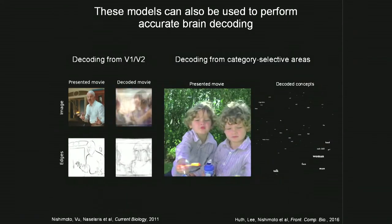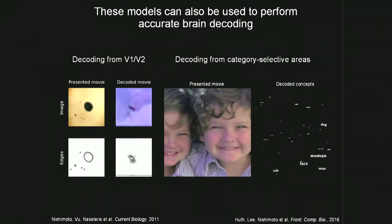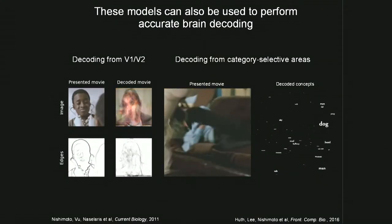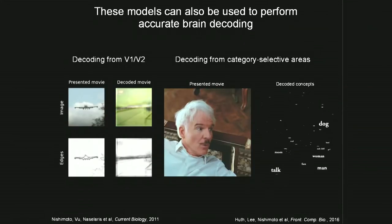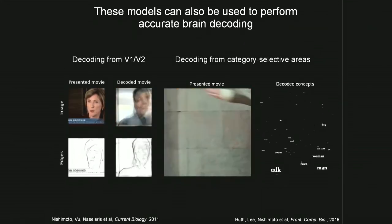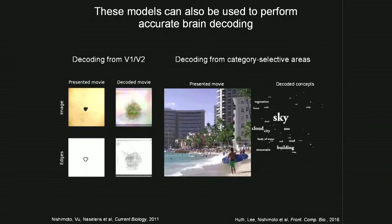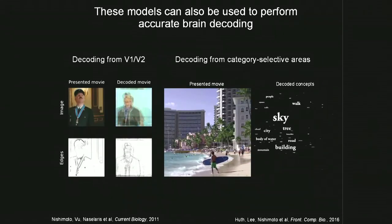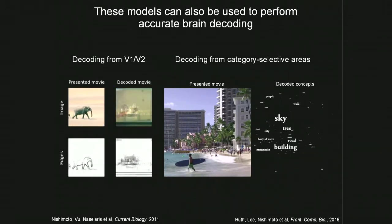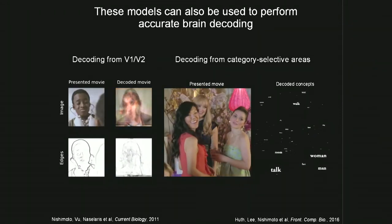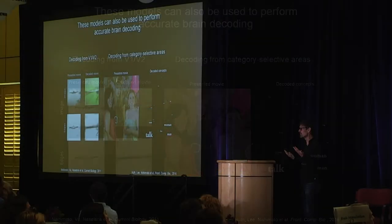You can also use these complicated regression models to do decoding. There's a fundamental symmetry between an encoding model and a decoding model by way of Bayes' theorem — so if we can build a really good encoding model of the brain, we can use that to decode information. On the left, we're decoding structural information from a very low-level visual area called primary visual cortex, which is the first stage of visual processing. There are actually about 50 individual visual areas in your brain, and we can build brain decoders for all 500 or so brain areas simultaneously.